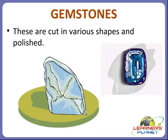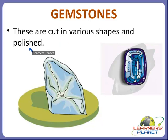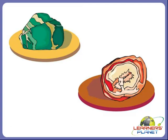We studied and learned about minerals and saw many examples. Now we will study about gemstones. Gemstones are very hard minerals. They are cut in various shapes and polished, making them very beautiful. Some gemstones are in their original forms and some are cut and polished.